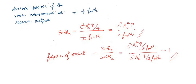Finally, we compute the figure of merit, which is the output SNR divided by the channel SNR. Since both are equal, the figure of merit equals 1. This is a good result. In the next video we will discuss the impact of noise in a single sideband suppressed carrier coherent detection receiver. Thanks for listening — if you have any doubts, post your questions in the comment section.